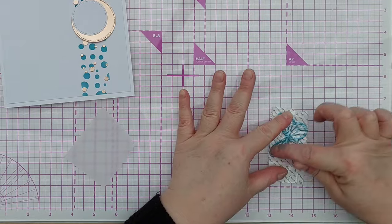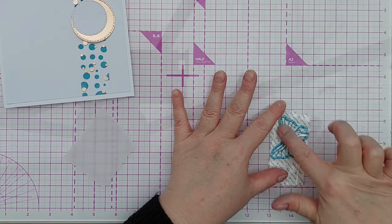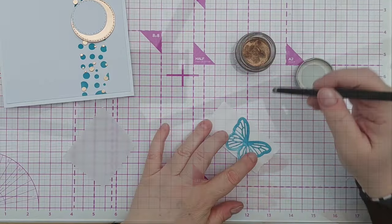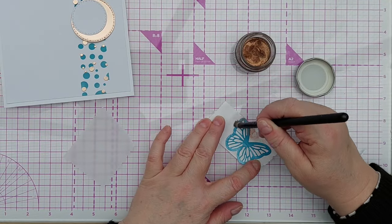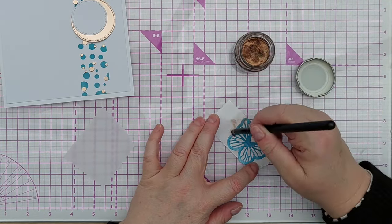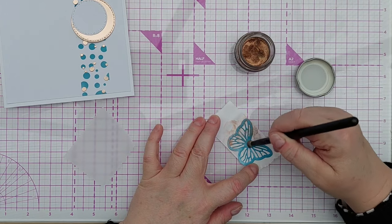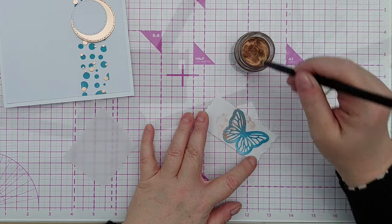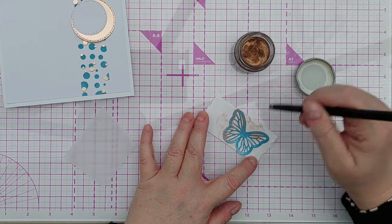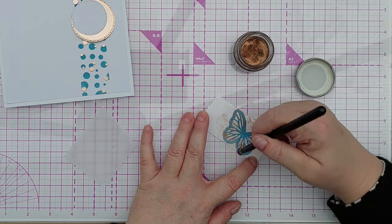This was a bit premature because I then decided to add some copper gilding wax to my butterfly and it got all stuck with the sticky remnants of the Xyron sticker maker. So really I should have done the gilding before the sticker making, but never mind, it looks all right in the end.